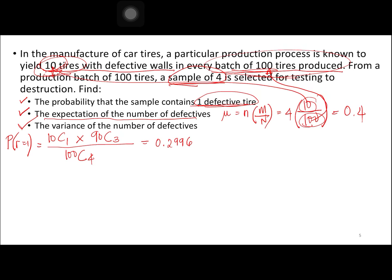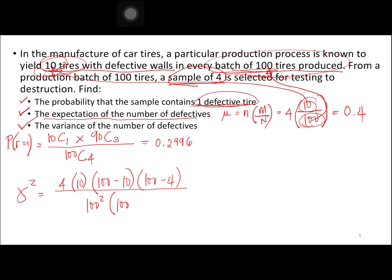Next, the variance of the number of defectives. Using the formula, variance equals 4 times 10 times (100 minus 10) times (100 minus 4), divided by 100 squared times (100 minus 1). This equals 0.3491.